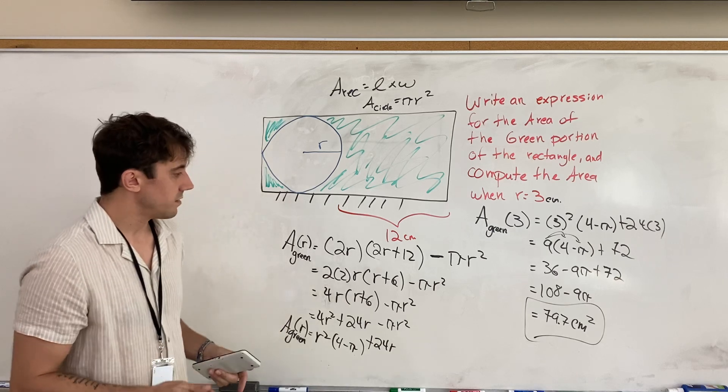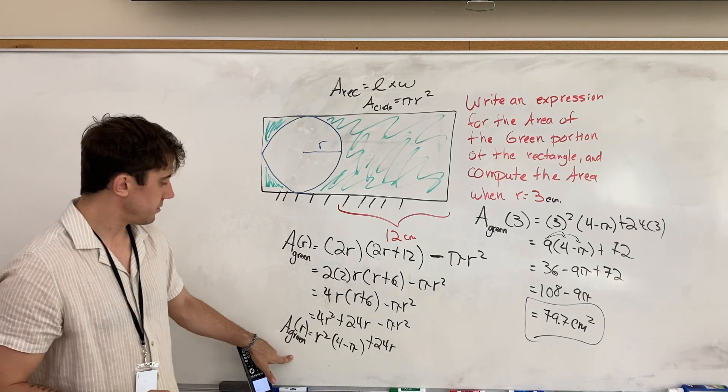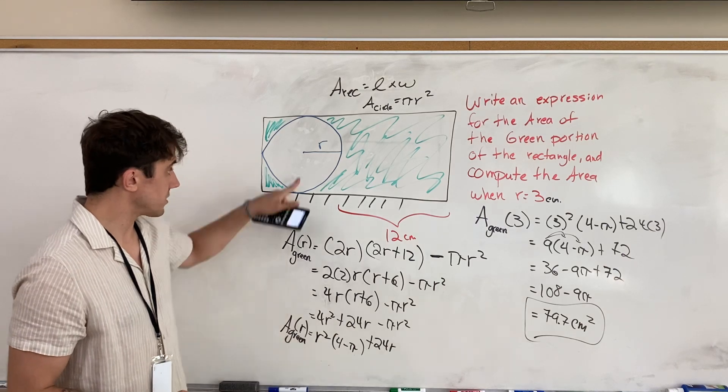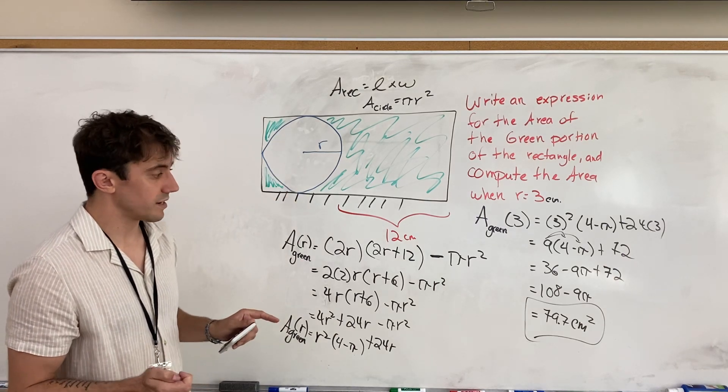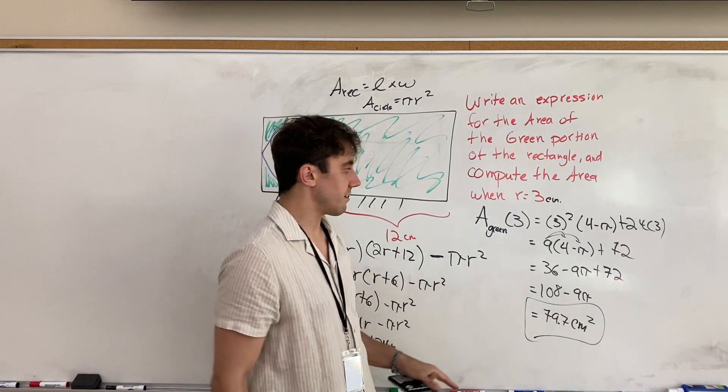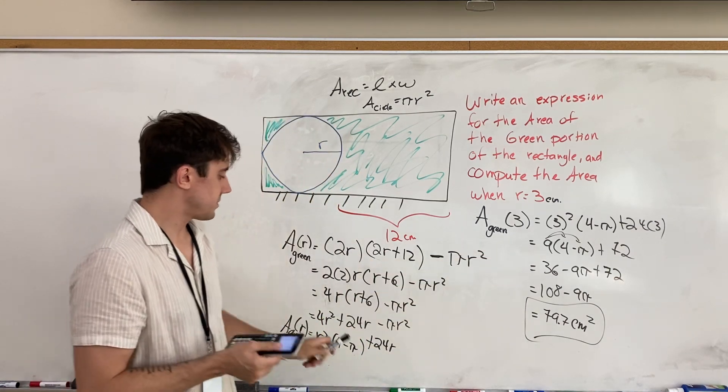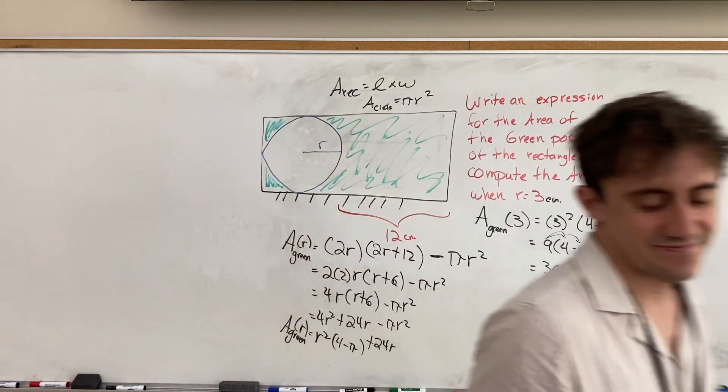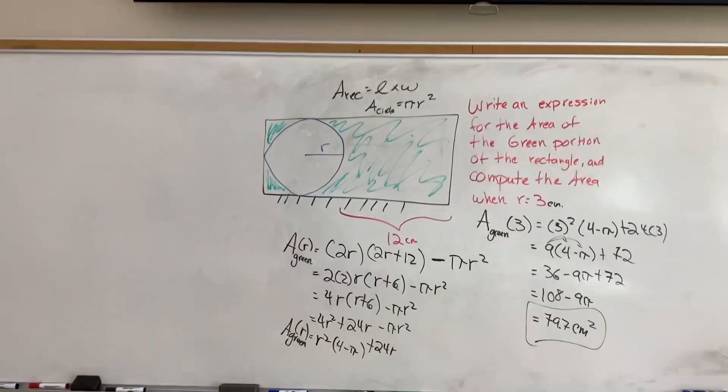So, that's our general function for the area of the green portion as a function of the radius r of the circle that's embedded inside the rectangle. And here's the area for a radius of 3. So, I hope that helps. Thank you for watching, and take care.